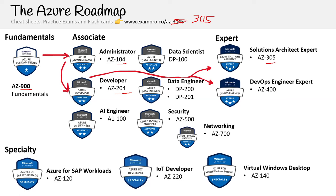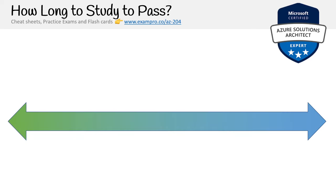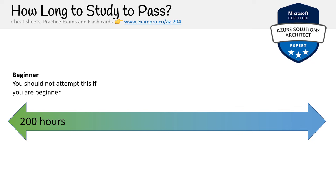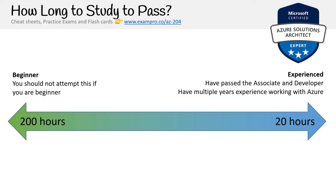I would probably also add the SC-900 and the DP-900 on the path. Azure just has a lot of certifications. How long would it take to pass? If you're a beginner, don't do this exam — it's not a beginner certification, it would take you well over a month. Start in the fundamentals, do the associates, and work your way up. If you're experienced, you already have the AZ-104 and AZ-204 with multiple years of working experience. On average, I think 50 hours is for somebody in the mid-tier area.